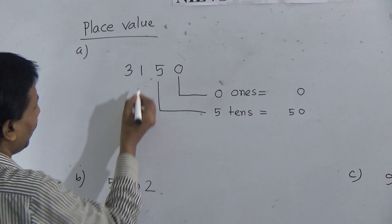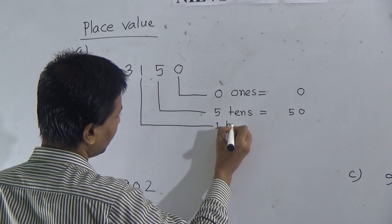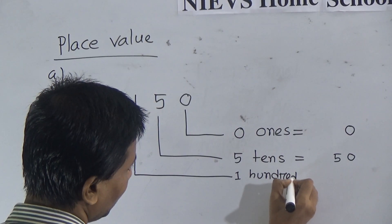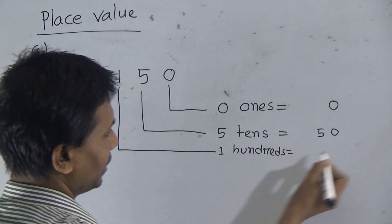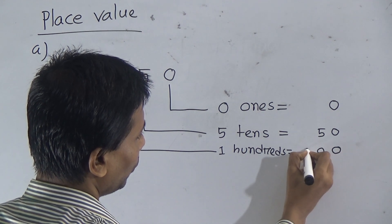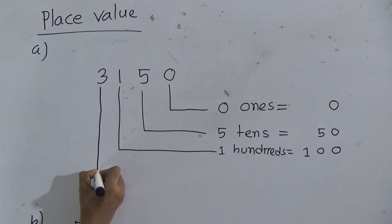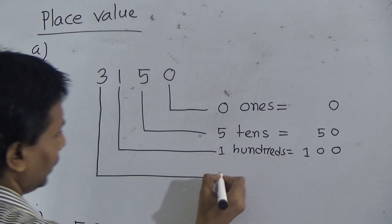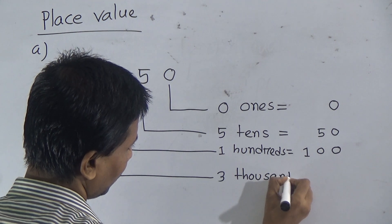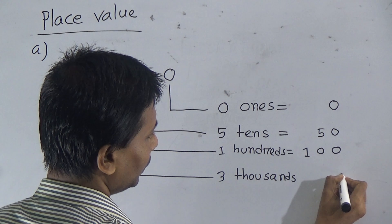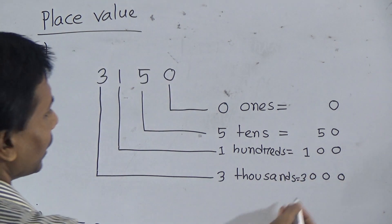Now this is the place value of hundreds — one hundreds. You see the spelling: H-U-N-D-R-E-D-S. Now give zero, zero, one. Then this is the place value of thousands — three thousands. Write three thousands: zero, zero, zero, then three. That means this is three thousands.